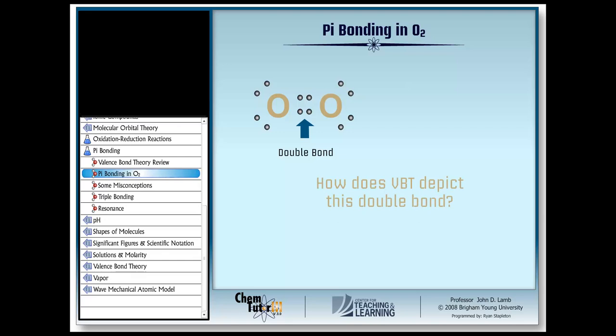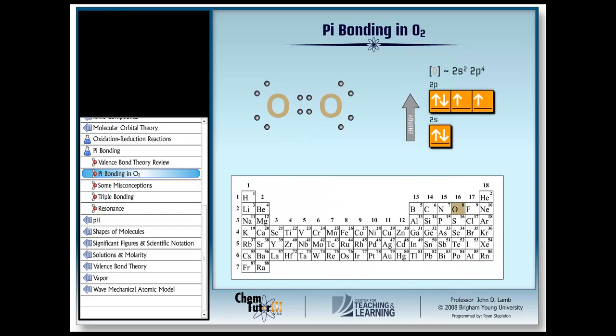Well, to answer this question, we need to take a look at the electron configuration of oxygen. Notice that each oxygen atom is short two electrons to complete its octet, and has one electron in each of two p orbitals.